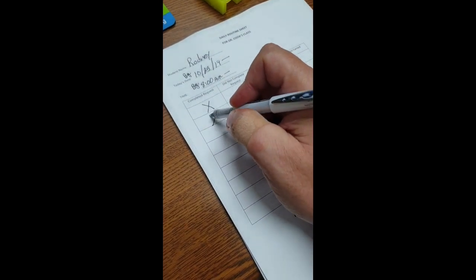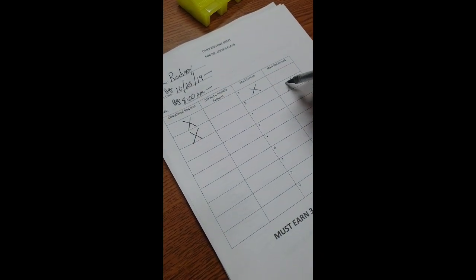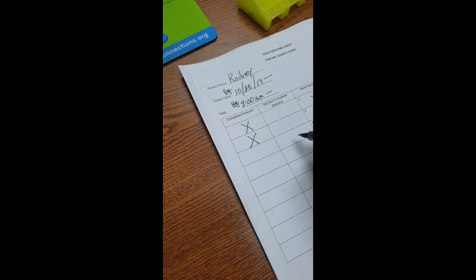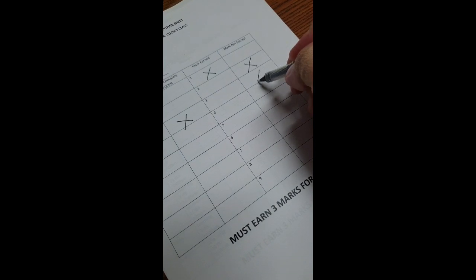Now a student can complete a request but not finish it within the parameters that you set. That means they didn't earn a mark but they still completed the request, or they may not complete the request and therefore they don't earn a mark.